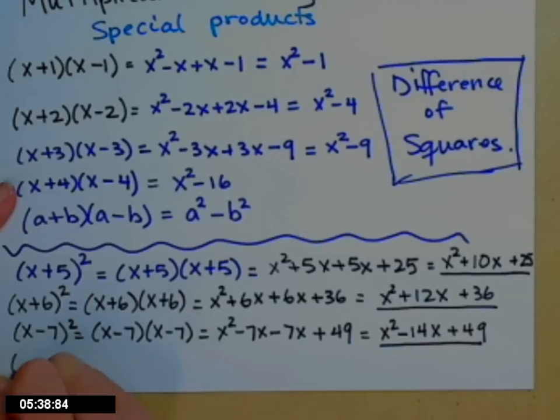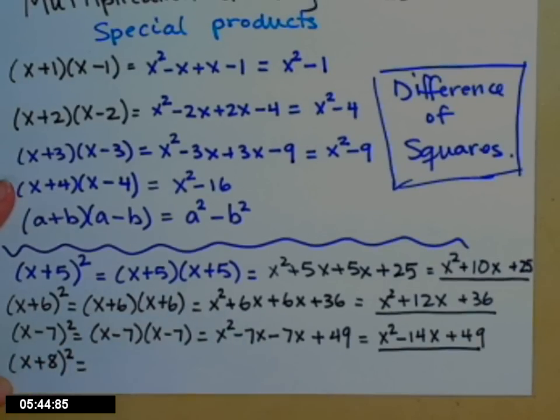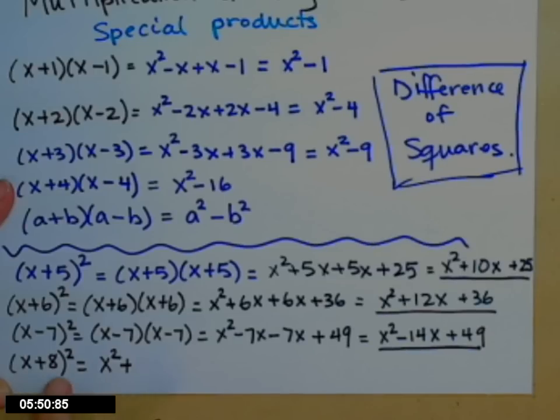Okay, so let's see. Can we write it down if I just have, I'm going to go back to pluses because they're prettier, x plus 8 squared. Square the first. 2 times the product of these guys. So I have 2 times x times 8. 16x. And then square the last.